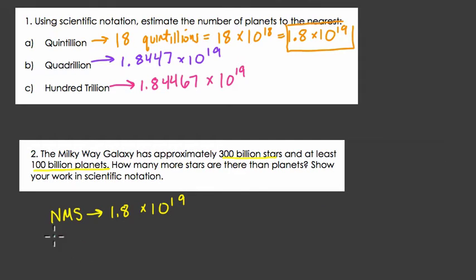So in the Milky Way, how many planets are there? There's 100 billion. A billion is 10 to the 9th, so that equals 100 times 10 to the 9th.